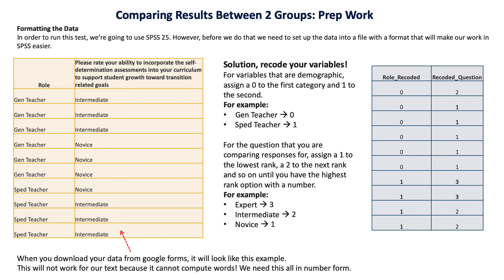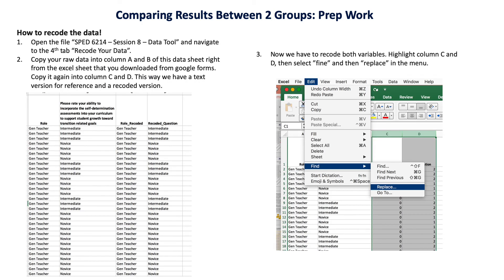So you're going to do that recoding for both of your variables — your demographic variable and the variable related to the practice you're looking to see differences between two groups on. When you download your data from Google Forms, it's going to look like this example, and that won't work in SPSS because SPSS can't compute words — we need everything in number form.